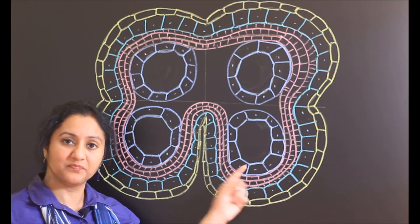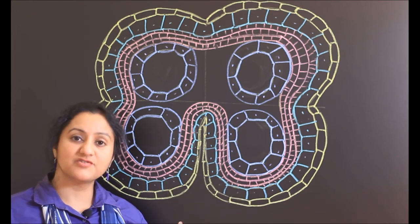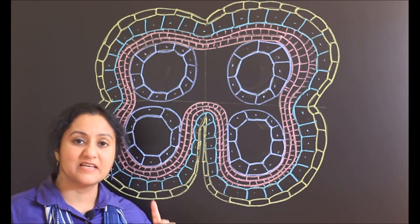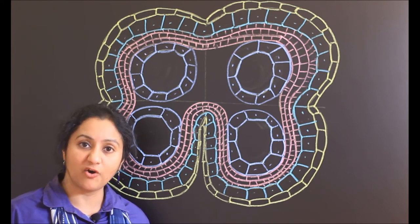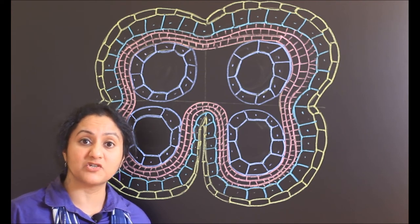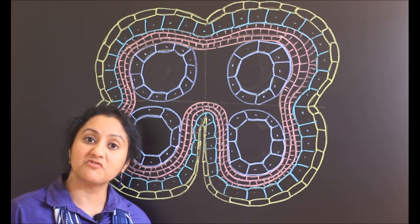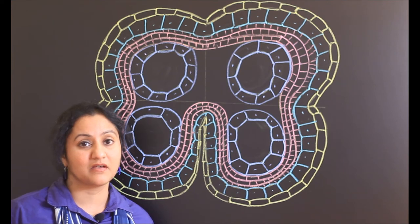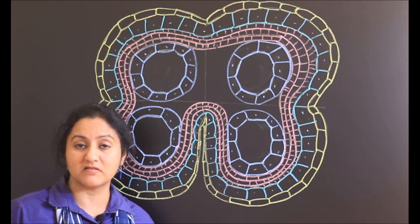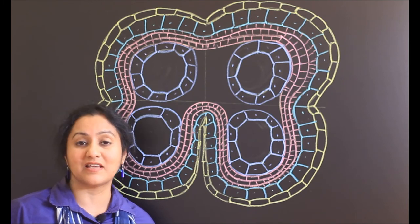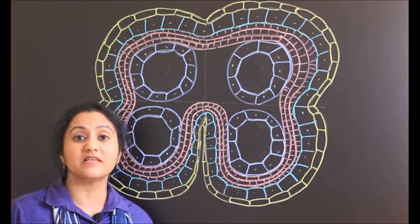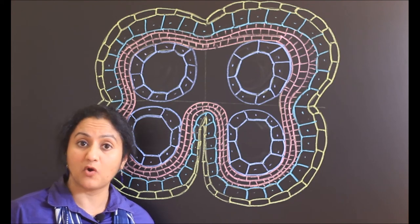The function of tapetum: one is to give nourishment for the pollen grains. Second, they secrete enzymes and hormones. Third, they help in secretion of special ubisch granules for the formation of exine of pollen grains. Fourth, they help in secretion of certain proteins that help pollen grains to recognize the compatibility. And even in entomophilous flowers they help in secretion of pollen kit.